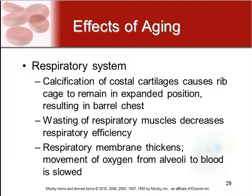There are also changes in the respiratory system. Calcification of the costal cartilage of the ribs means the flexible cartilage becomes more rigid like bone, limiting the rib cage's ability to expand. This causes a barrel chest appearance in older adults.